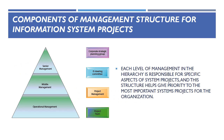Here are the components of management structure for information system projects. Each level of management in the hierarchy is responsible for specific aspects of system projects, and this structure helps give priority to the most important system projects for the organization. The corporate strategic planning team is in charge of creating the company's strategy plan, which can necessitate creating new processes. This group frequently chooses to sponsor IT projects that can significantly improve one or more key performance indicators, because they have devised objective measures of firm performance. The company's board of directors examines and discusses these performance indicators.